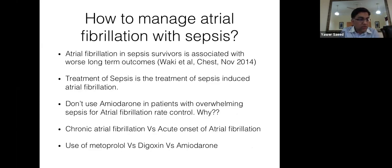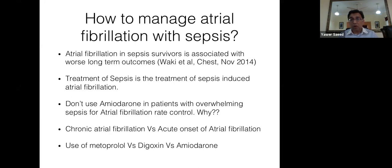An important question is how to manage atrial fibrillation in sepsis. Studies including Waki et al. have shown that AF in sepsis survivors is associated with worse long-term outcomes. Patients with sepsis who develop AF show signs that their heart is not in a stable state — they may be developing cardiomyopathy and are at higher risk of stroke.